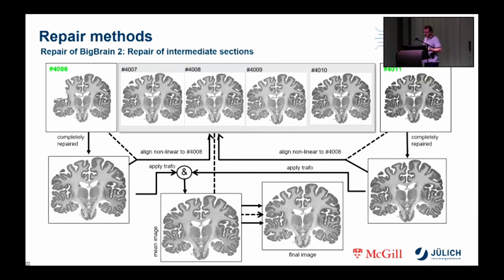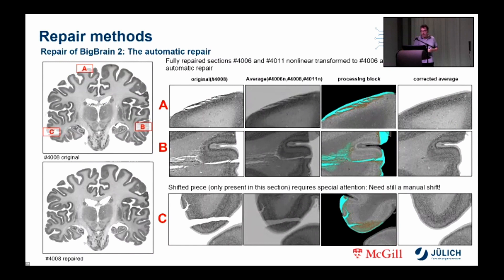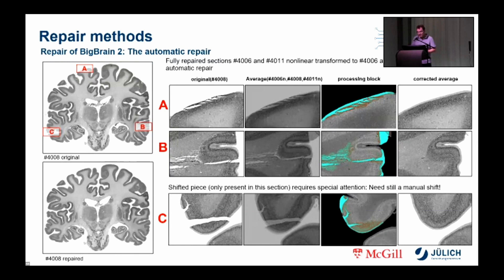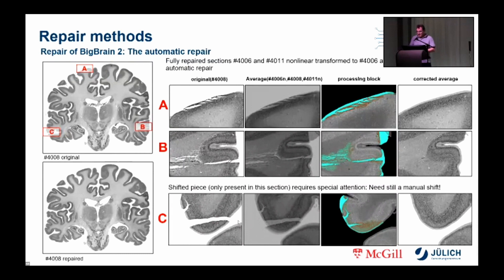Similar to what was implemented for BigBrain 1, for automatic repair the transformed fully repaired sections 4006 and 4011 and section 4008 were averaged. Areas in need of repair turn out to be outliers that deviate significantly from the calculated mean. Identified areas in need of correction are then automatically repaired by replacing the tissue in section 4008 with tissue from the fully repaired non-linearly transformed sections 4006 and 4011. However, for the shifted piece in sample C, an additional manual repair was still necessary. Of course everything works well only if the sections have been transformed very well, and this is also controlled via the quality control tool.